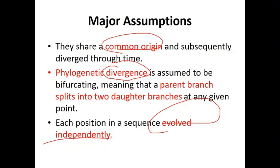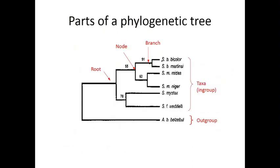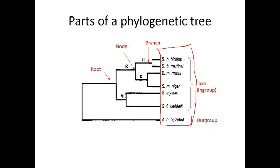This concludes the first video. In the second video we will learn a few terminologies used in phylogenetic analysis. Phylogenetic analysis is always represented in the form of a tree. The end of the tree — the tip — represents the present-day microorganism or species. This is called the taxa.